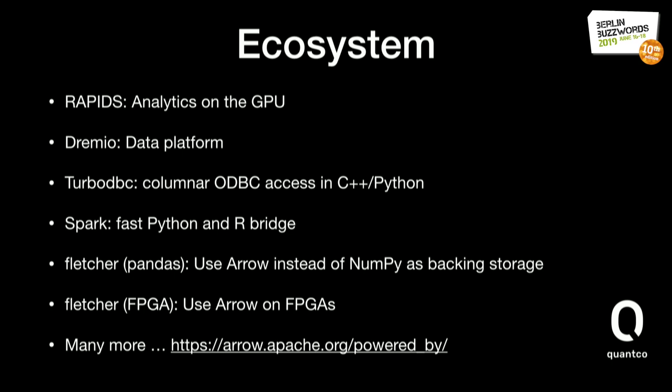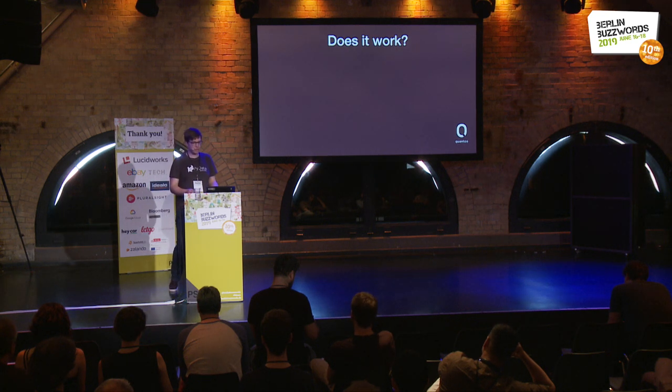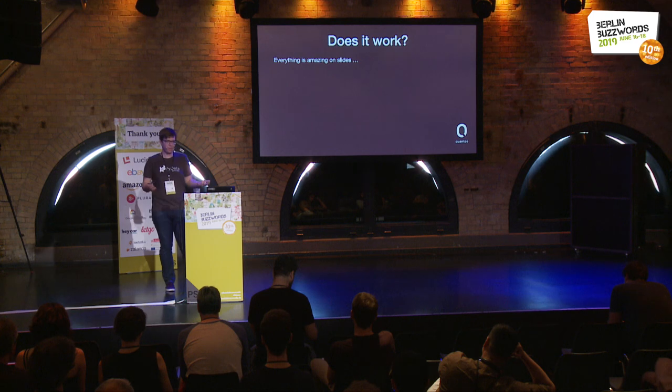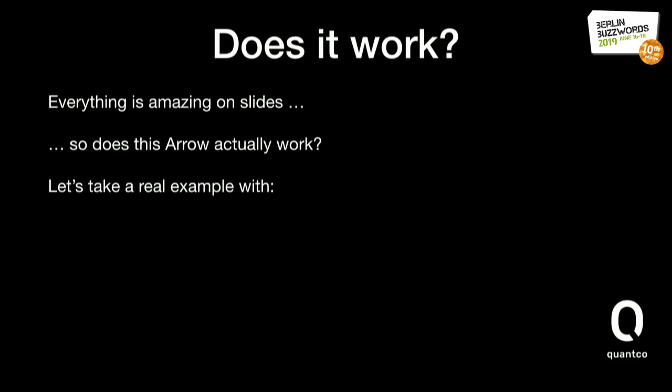There are also projects like Fletcher — one giving Python fast analytics on strings using Arrow's efficient string storage, and another using Arrow as a data structure for analytics on FPGAs. Now, after all this background on what Arrow is and how it works, the question is: does it really work? I'll give a simple example. Code demos in presentations never work, so I ran the code locally and have it on slides rather than attempting a live demo.